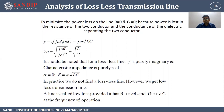It should be noted that for a lossless line, gamma is purely imaginary and characteristic impedance is purely real. So alpha is 0 and beta is omega times under root of LC. In practice we do not find a lossless line; however we get a low loss transmission line.